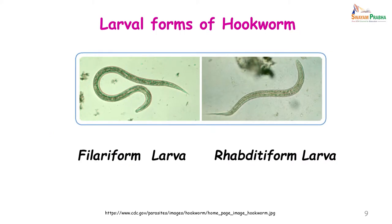The larval forms of the hookworm consist of the newly hatched rhabditiform larva, which then matures into the infective filariform larva. The rhabditiform larva is short and stout, whereas the filariform larva is slim and long.